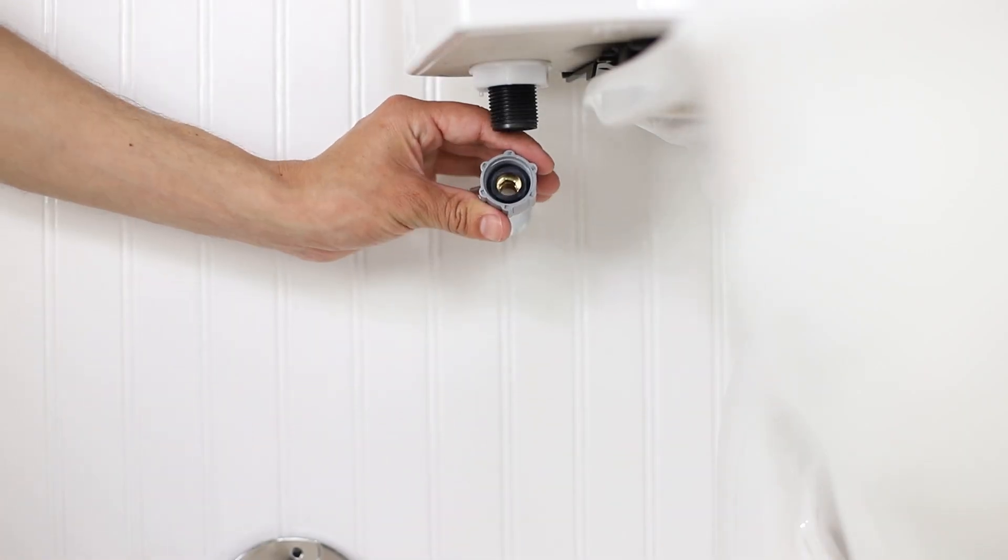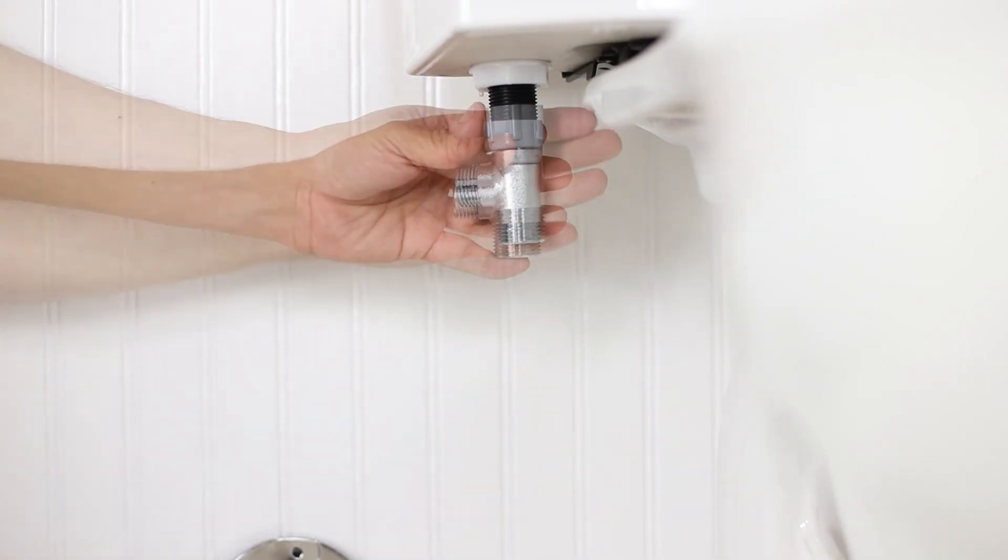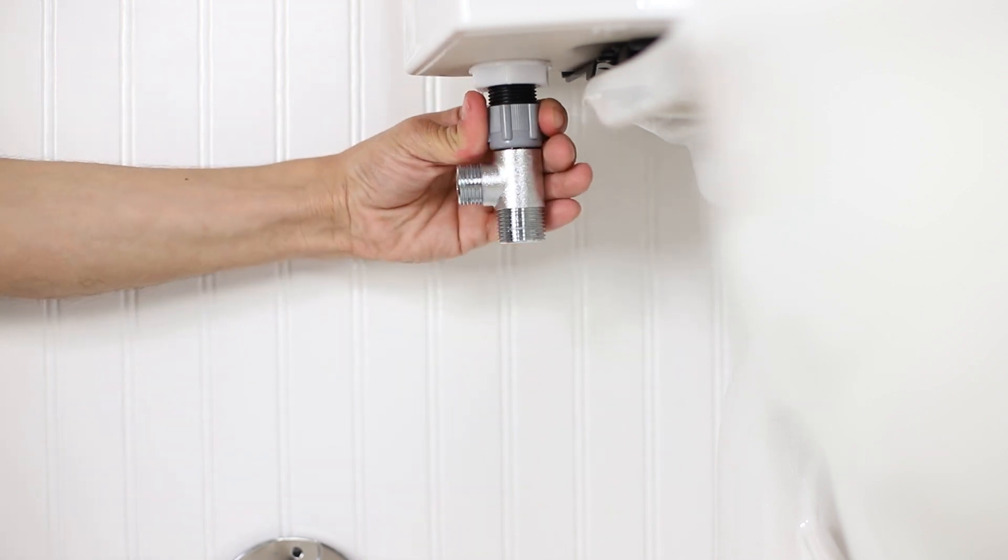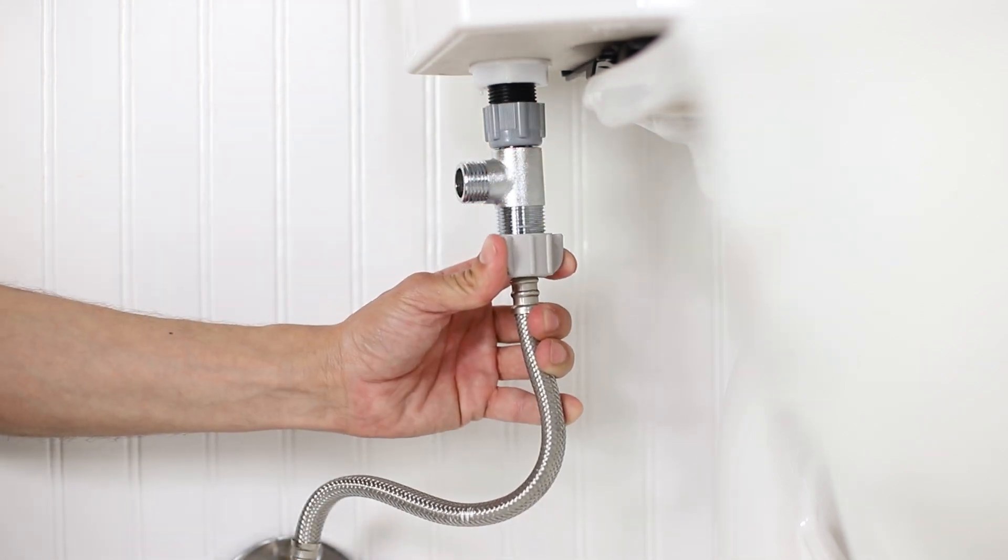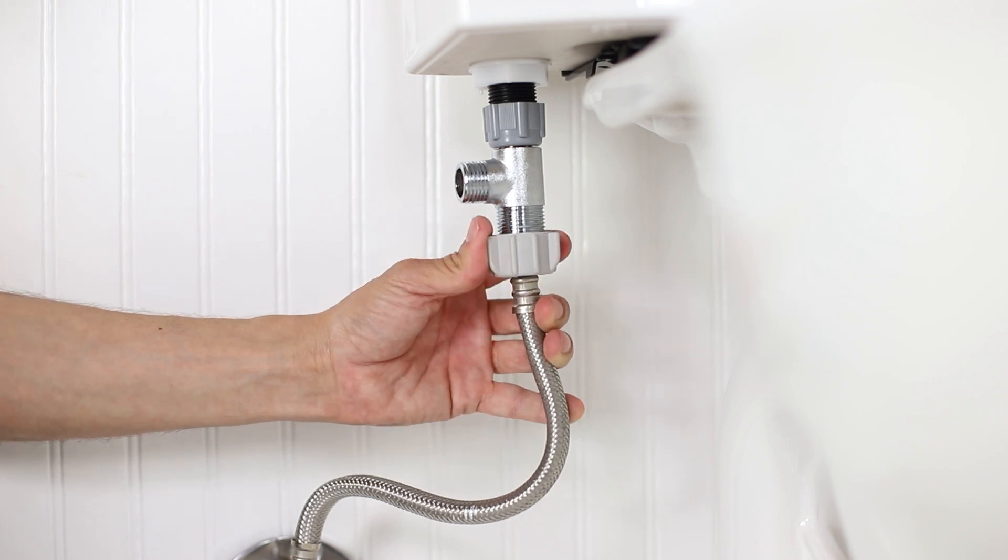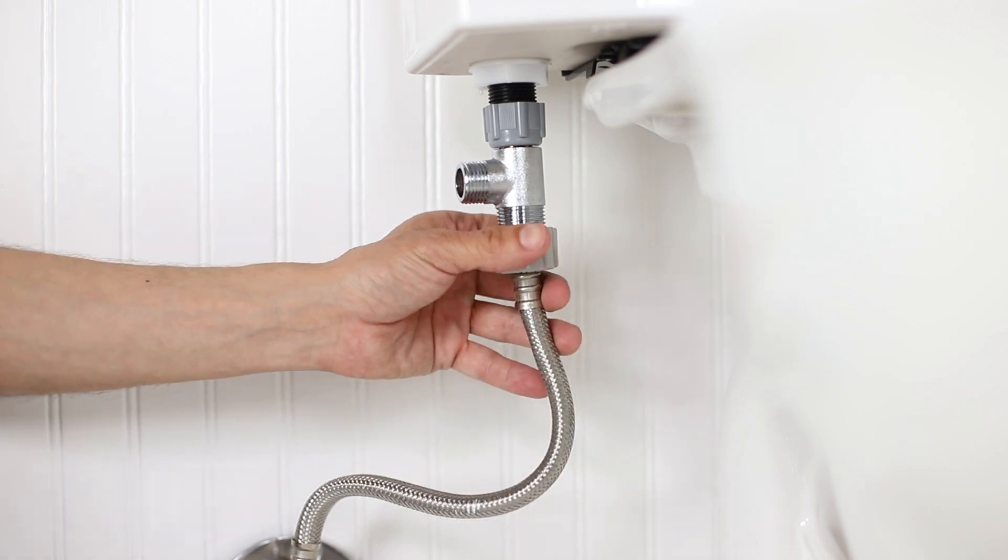Check to ensure the rubber washer sits flat inside of the T-valve. Connect the provided T-valve to the fill valve under the toilet tank. Reconnect the flexible supply line to the bottom of the T-valve.